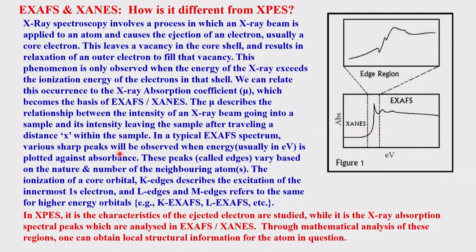If the ejected electron comes from the 1s level, it is the K-edge; otherwise it is L, M, and so on. You can perform EXAFS or XANES for the K, L, or M shells. Most often it is done with the K shell, though L and M can also be used.